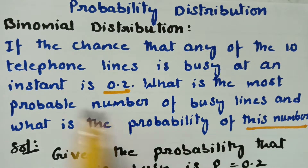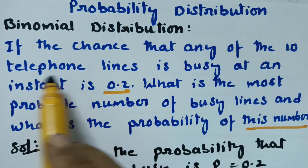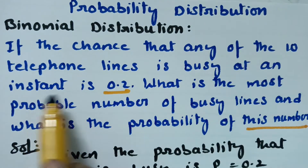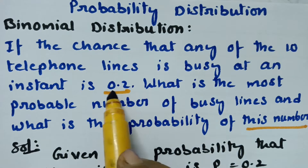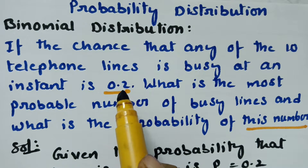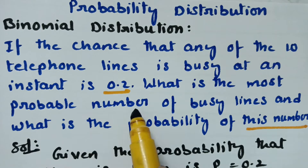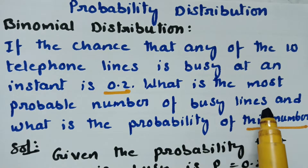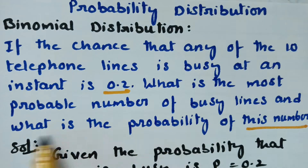If the chance that any of the 10 telephone lines is busy at an instant is 0.2, then p is given as 0.2 and obviously q will be 0.8. What will be the most probable number of busy lines, and what is the probability of this number?